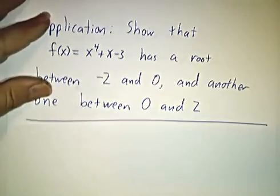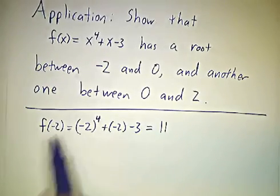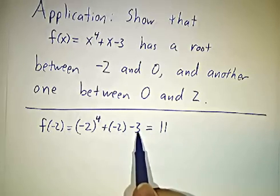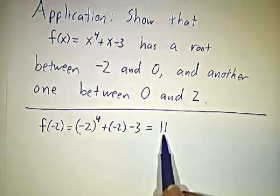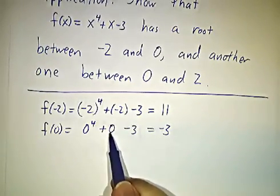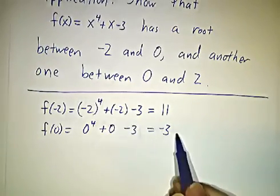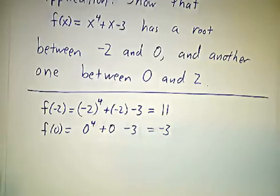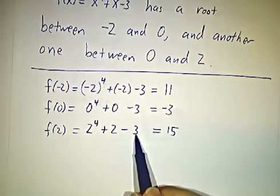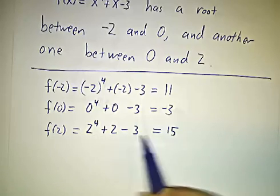And the way to see that is we compute some values. f(-2) is negative 2 to the 4th, that's 16, plus negative 2 plus negative 3, that's 11. f(0) is 0 to the 4th plus 0 minus 3, that's negative 3. f(2) is 2 to the 4th plus 2 minus 3, 16 plus 2 minus 3 makes 15.